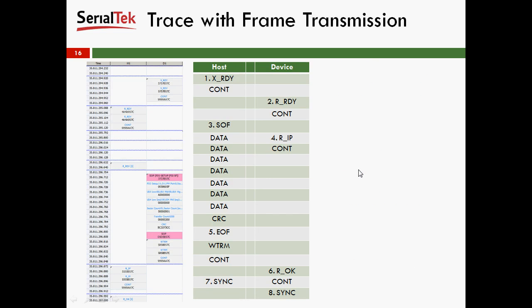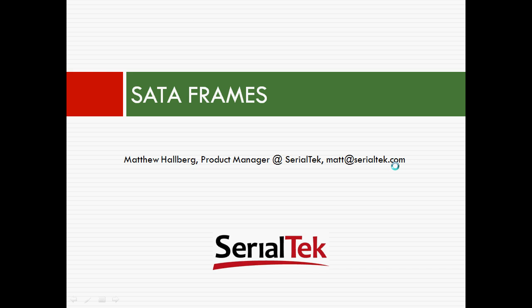Here's a trace with frame transmission. You'll see X-Readys, R-Readys, and SOF, followed by a bunch of frame data, a CRC and EOF, some WTRMs and a CONT. The device is sending RIPs, and at the bottom, an R-OK. That concludes this portion of training. Please stay tuned for our next section, which is entitled SATA Frames. Thank you.